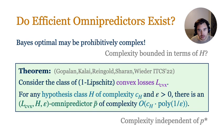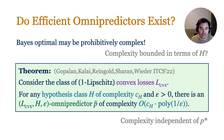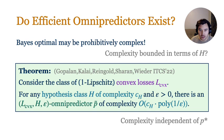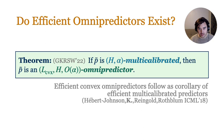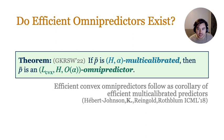The main result of the omnipredictors paper shows such a feasibility result. In particular, they show that efficient omnipredictors exist for the class of all convex loss functions in complexity completely independent of p-star. So for any prediction task, there is a single predictor p-tilde of complexity roughly that of the hypotheses in H, such that for any convex loss you pick, post-processing p-tilde gives optimal predictions. The proof goes by demonstrating a connection to multi-calibration, a notion from algorithmic fairness: an H-multi-calibrated predictor is actually a convex omnipredictor for hypothesis class H.